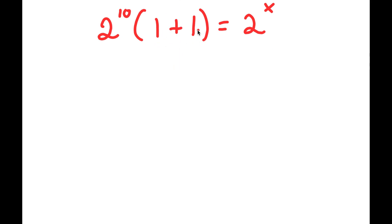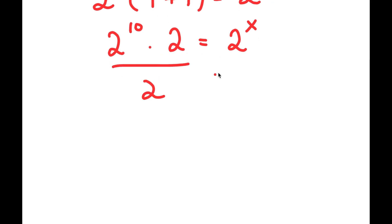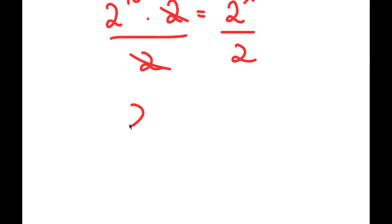And 1 plus 1 equals 2. So I get 2 to the power of 10 times 2 is equal to 2 to the power of x. Now if I divide both sides by 2, I get 2 to the power of 10 is equal to 2 to the power of x divided by 2.